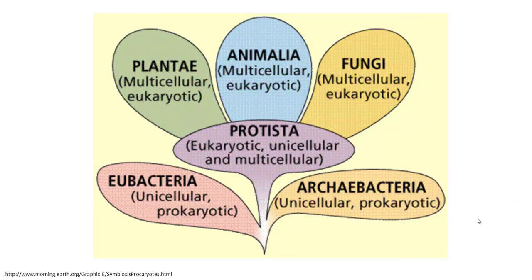Here we have the general six kingdoms of life: plants, animals, fungi, protists, eubacteria — which are the bacteria most commonly discussed, like salmonella and E. coli — and archaeobacteria, which are bacteria that can only grow in very extreme temperatures and conditions, like in thermal vents.